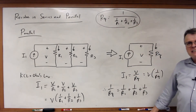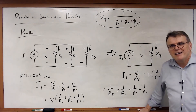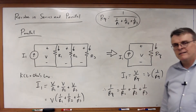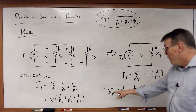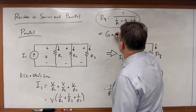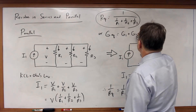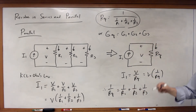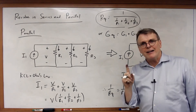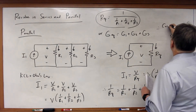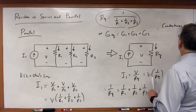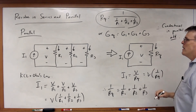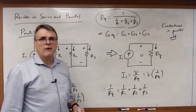This looks messy, but there's something simple here if you think about it differently. What is 1 over R? It's conductance. What this equation really says is that GEQ equals G1 plus G2 plus G3. In other words, conductances in parallel add — just as resistances in series add.